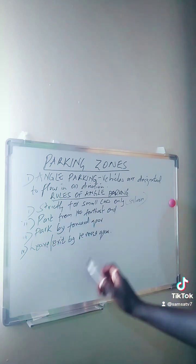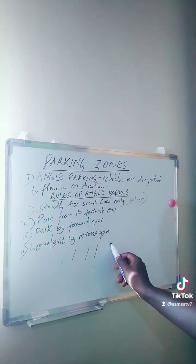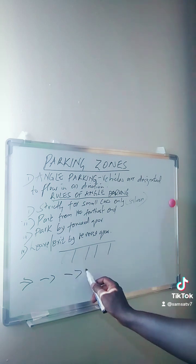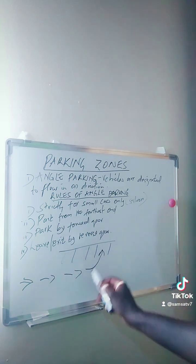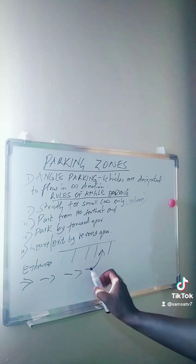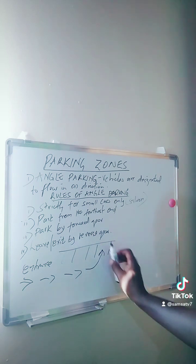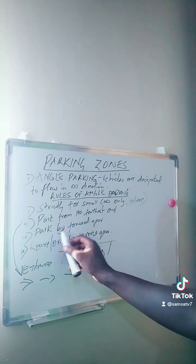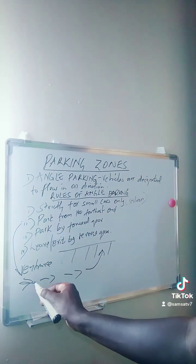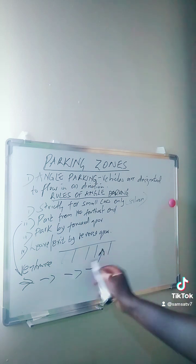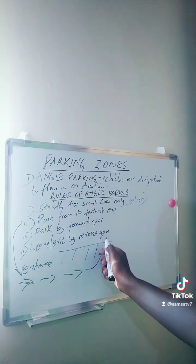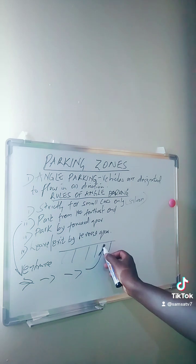For angle parking, pack from the furthest end and come into your parking space by forward gear. So when you want to park, you go in forward gear — utanza kupaki kuna ku reverse — leave or exit using reverse gear. So if you have parked here and you want to leave — unataka kutoka.